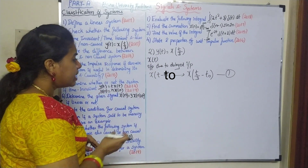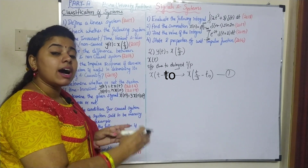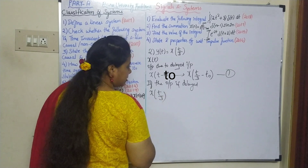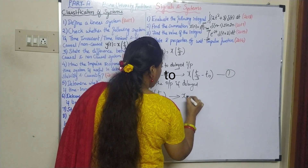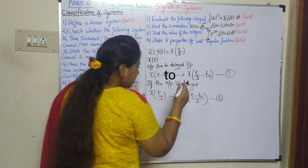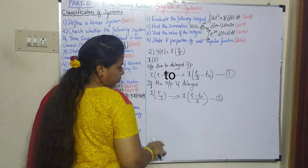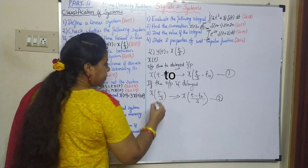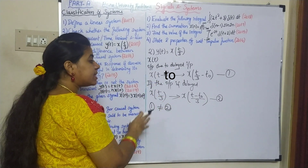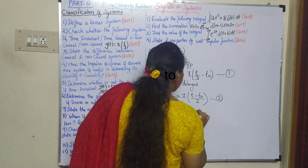Next, if the output is delayed, we get the response to that delay. The first response is x(t/3). If you delay this, it becomes x((t - t0) / 3). This is the output due to delayed input. Now the first equation is not equal to the second equation. When the input is delayed, the response is not equal to the delayed output, so that is time-variant.